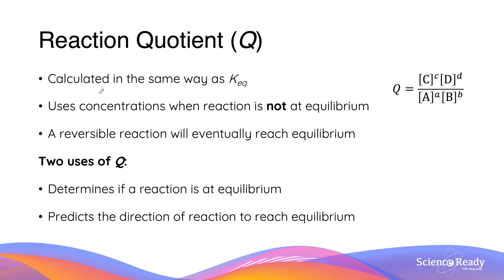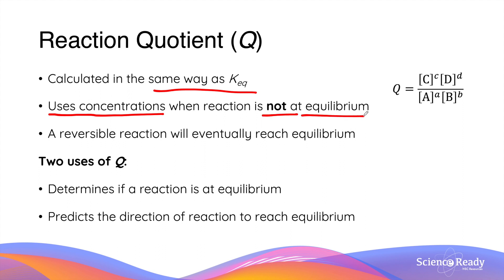Reaction quotient is a number that is calculated in the same way as the equilibrium constant Keq. However, instead of using concentrations at equilibrium, the way we calculate reaction quotient uses concentrations of chemicals where the reaction is not at equilibrium.